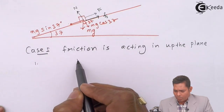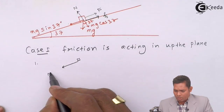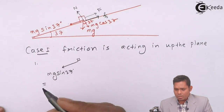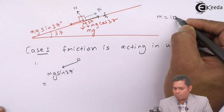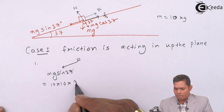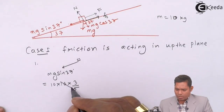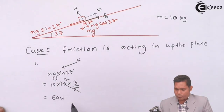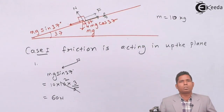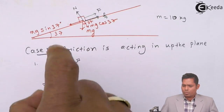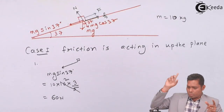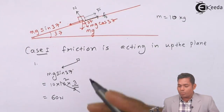Let us find out whether this is the case. The downward force acting on the block is Mg sin 37 degrees, which comes out to be: mass is 10 kg, so 10 × 10 × sin 37 = 10 × 10 × 3/5 = 60 Newton. So the downward force along the plane is 60 Newton, and to keep the block at rest, the force up the plane must also be 60 Newton.